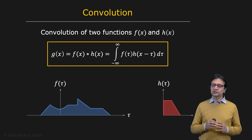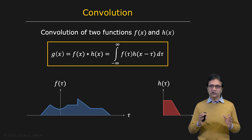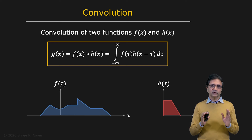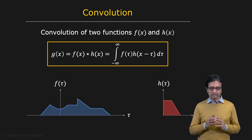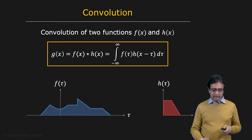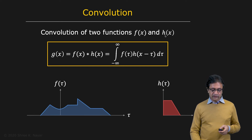And now we are going to talk about the all-important concept of convolution. Irrespective of whether you end up working in computer vision or not, the notion of convolution is going to pop up sooner or later in your life, so please pay close attention to it. Convolution of two functions, f of x and h of x, can be denoted with an asterisk.